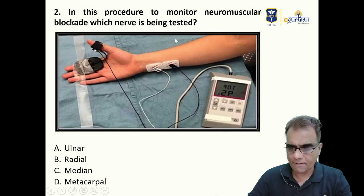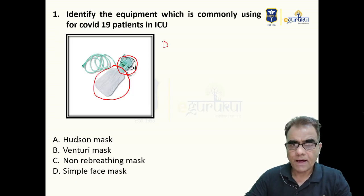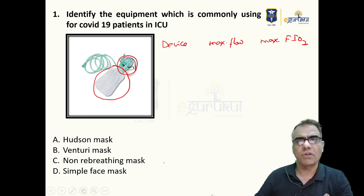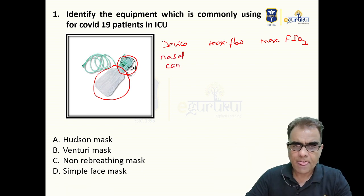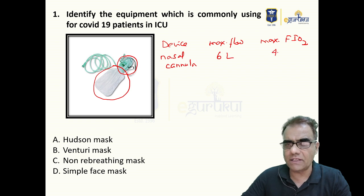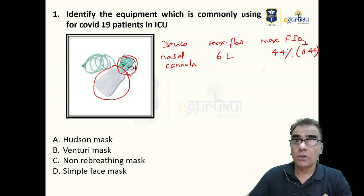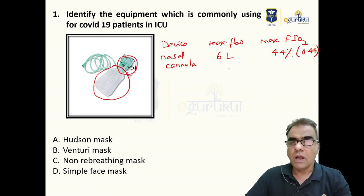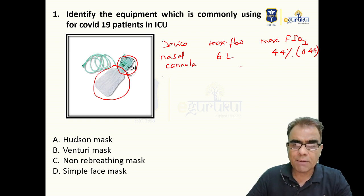We can summarize devices by maximum flow and maximum delivered oxygen (FiO2 — fraction of inspired oxygen). For nasal cannula, maximum flow is 6L, and maximum oxygen delivered is around 44% (FiO2 0.44). It is important to note that many people use nasal cannula at 10L — that is just wasting oxygen, since 6L already gives maximum performance of 44%.